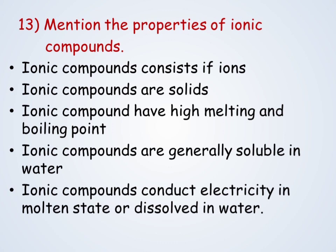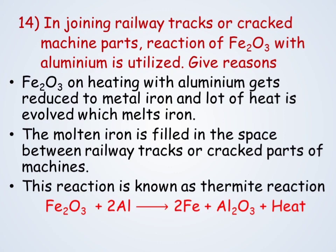In joining railway tracks or cracked machine parts, the reaction of Fe₂O₃ (ferric oxide) with aluminum is utilized because Fe₂O₃ on heating with aluminum gets reduced to metal iron and a lot of heat is evolved which melts the iron. This molten iron is filled in the space between railway tracks or cracked parts of a machine. This is called the thermite reaction: Fe₂O₃ + 2Al → 2Fe + Al₂O₃ + heat.